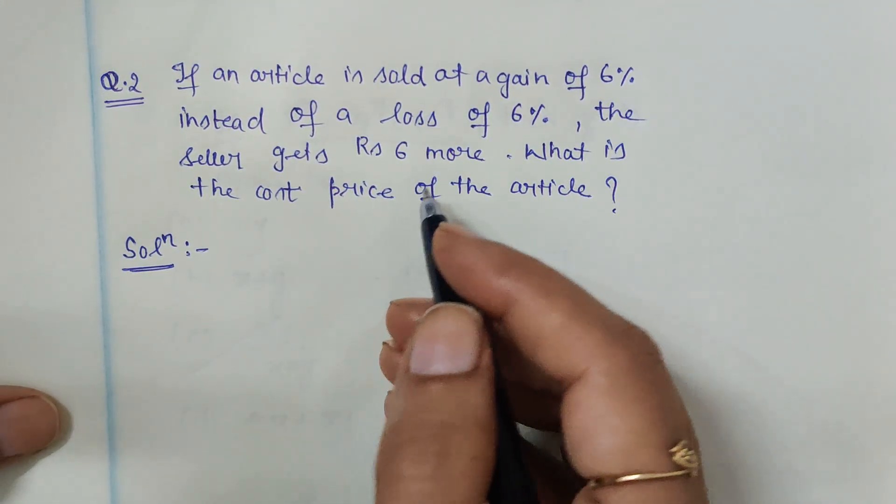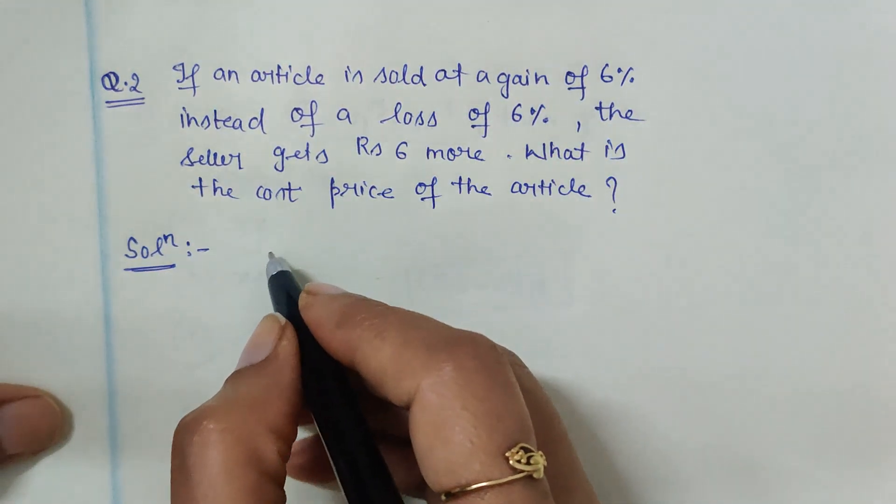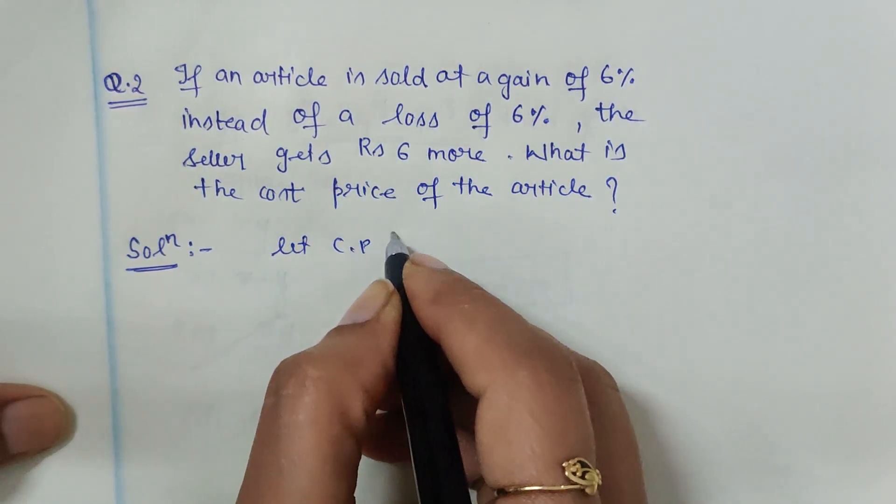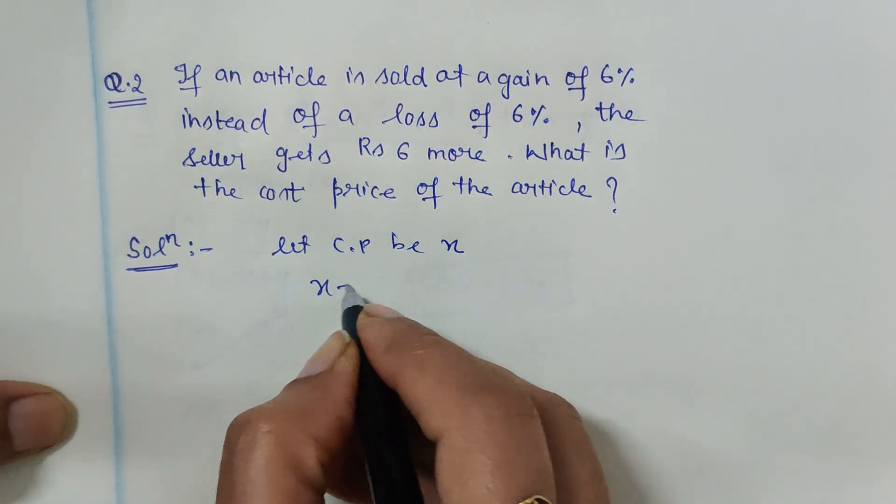So let's first check the value at the gain of 6%. If the cost price is X, let the cost price be X because that we have to find. So how the gain can be calculated: X plus 6% of X.